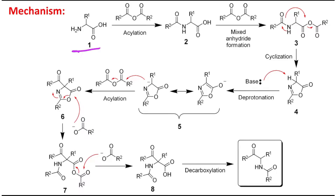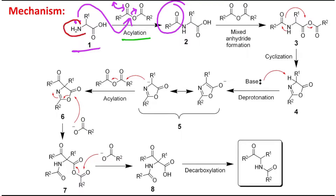Now let's come to the mechanism. The amino acid reacts with acetic anhydride — the anhydride opens up and ultimately produces an acyl amino acid. This first step is acylation of the amine. If there is some base in the medium, this step is favored, because the nitrogen needs to eliminate one proton after the nucleophilic attack. Proton elimination becomes easier in the presence of a base, since after the nucleophilic attack the nitrogen carries a positive charge.